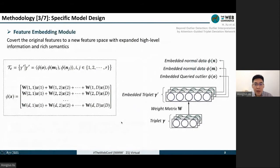The next component is the feature embedding module. We expect this module can convert our original features to a new feature space with expanded high-level information and rich semantics. ATON further needs to attach attention to each embedding dimension.